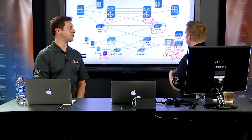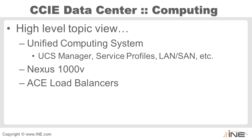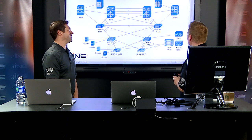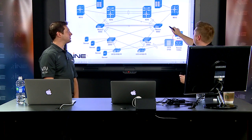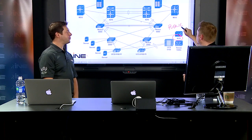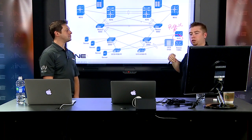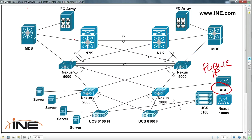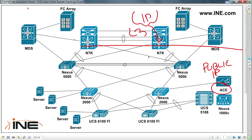The last portion of computing is the ACE load balancer, which is basically an application-level switch — similar to an F5 LTM. The goal of the ACE module is that when users come in from the internet to a web server, their traffic arrives at the Nexus 7K as the Layer 3 boundary. Below that is a Layer 2 LAN, and the Nexus needs to resolve the IP address to a MAC address via ARP to forward the frame.